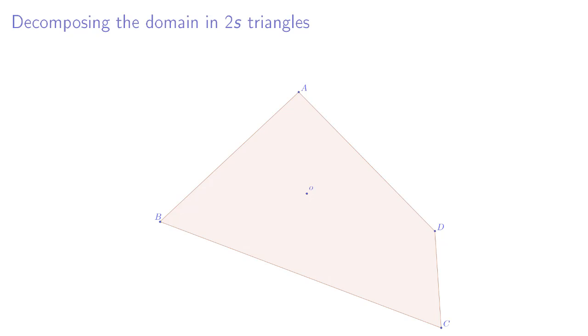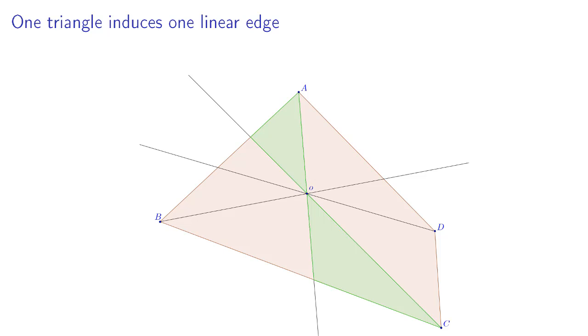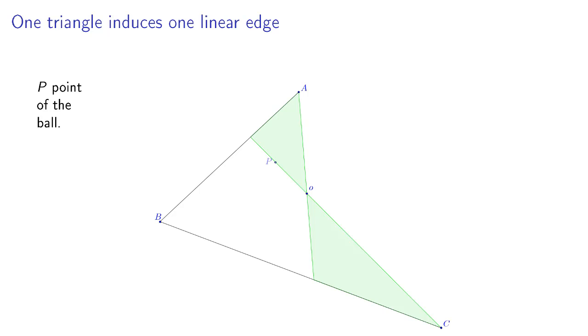We will now sketch a proof for the complexity and the location of vertices in two dimensions. We first decompose the domain in at most 2s triangles by tracing the rays. The goal is to show that a triangle induces one linear edge of the Hilbert ball. If p is a point on the Hilbert ball and b the intersection point of two edges, the line passing through b and p clipped to the triangle is an edge of the ball. Using the projective invariance property, it can be shown that any point on this segment belongs to an edge of the Hilbert ball.